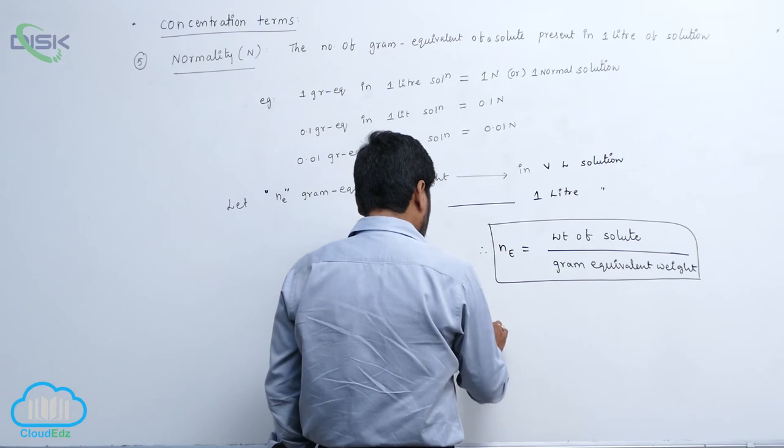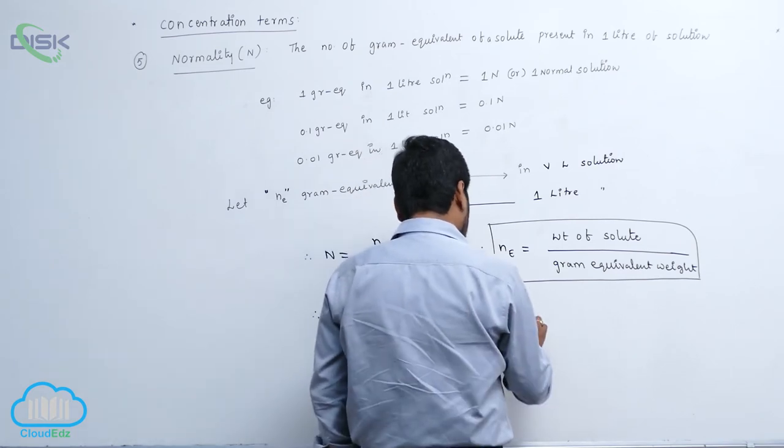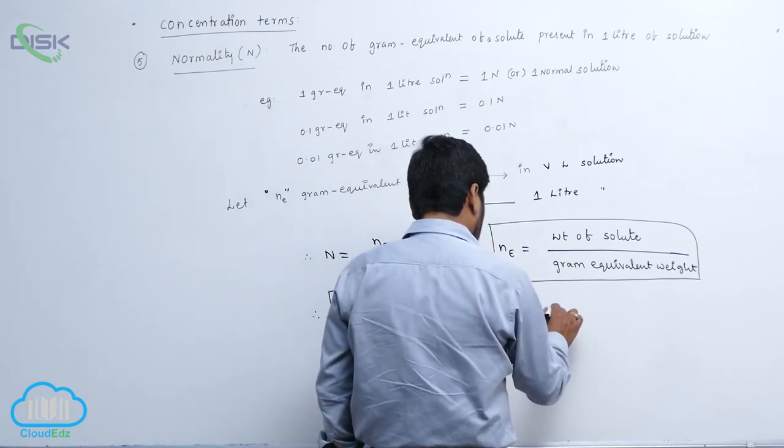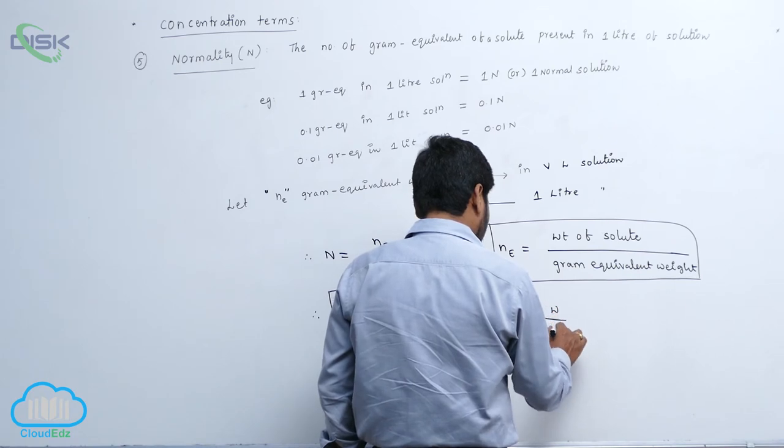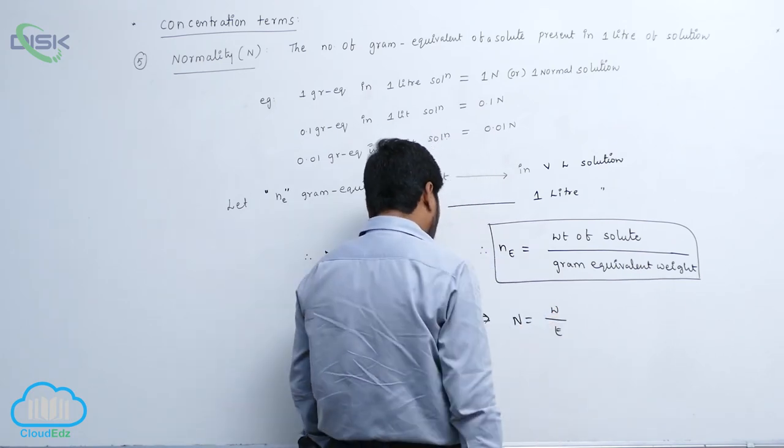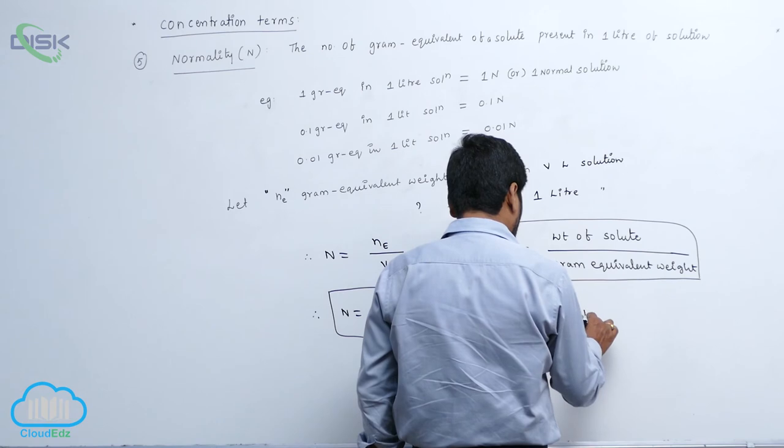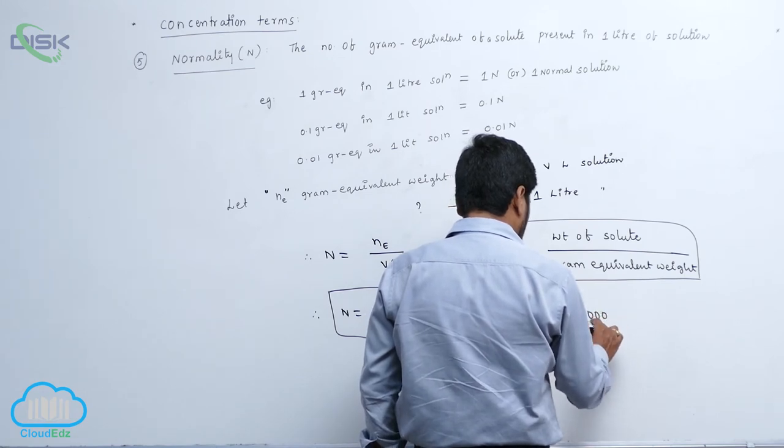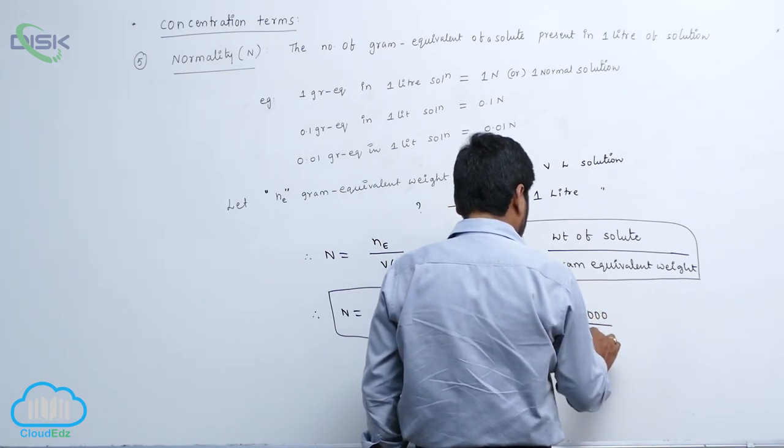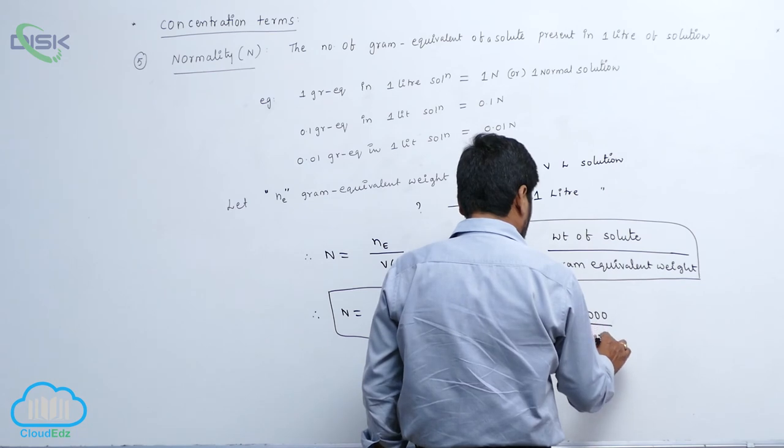It may be represented as N equals to W by E. E means equivalent weight into 1000 by which one? V in ml.